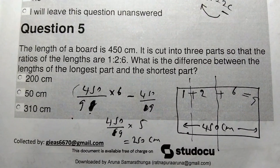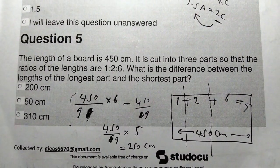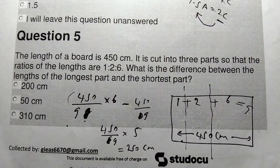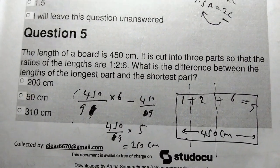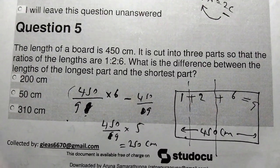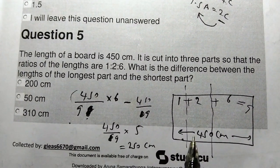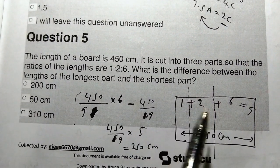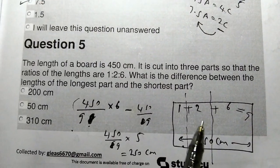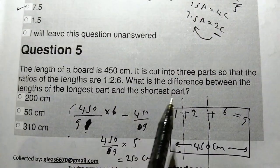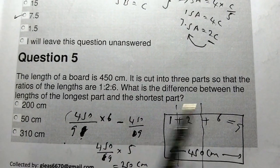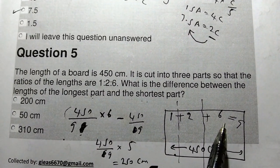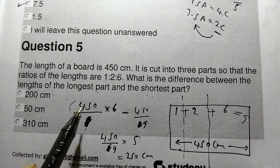Question number five: the length of a board is 150 centimeters. It is cut into three parts so that the ratios of the lengths are 1:2:6. What is the difference between the length of the longest part and the shortest part? The longest part corresponds to ratio 6 and the shortest to ratio 1.